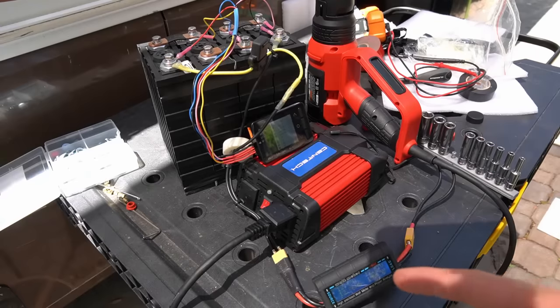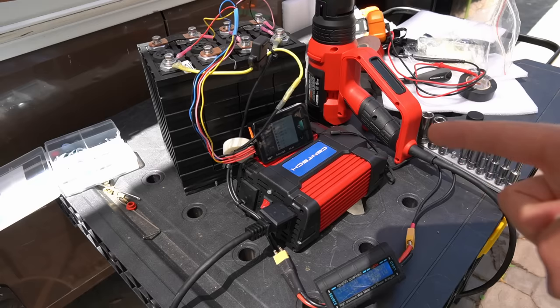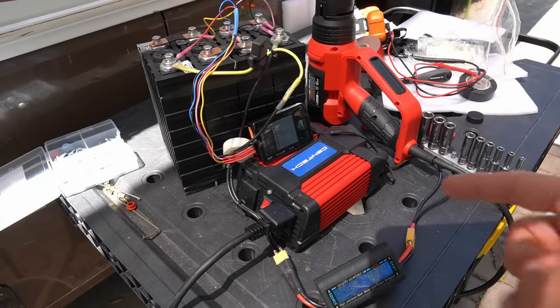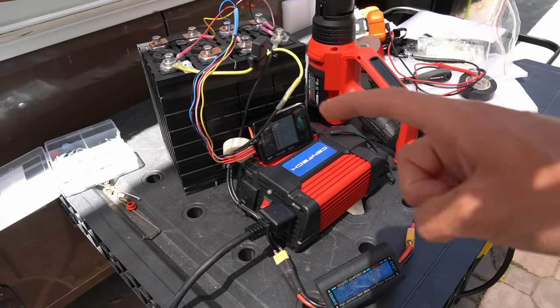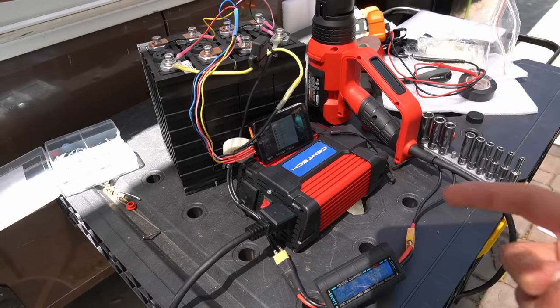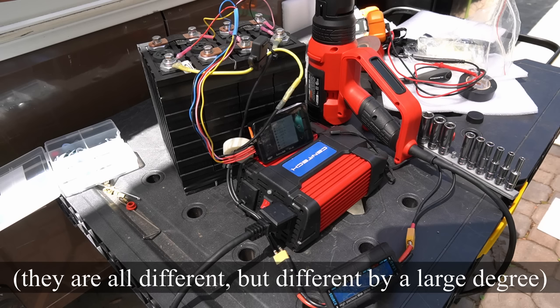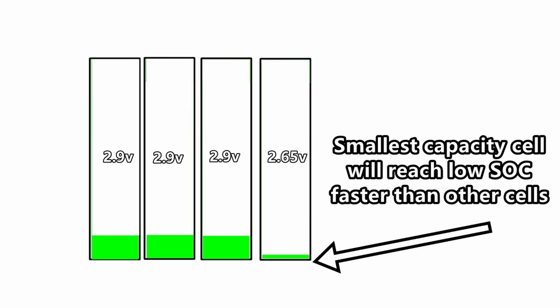We have an inverter and a watt meter connected to a heat gun. And we're using 159 watts. And we're going to discharge this battery. We're also going to watch the balance of the cells when it's under load to see if the internal resistance of one is different. Also, when we discharge it, if one reaches the low state of charge faster than the other cells, we'll know that they're not matched by capacity. So this will be an interesting test.